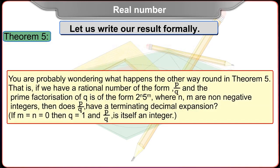You are probably wondering what happens the other way round in Theorem 5. That is, if we have a rational number of the form P upon Q, and the prime factorization of Q is of the form 2 raised to n into 5 raised to m, where n, m are non-negative integers, then does P upon Q have a terminating decimal expansion? If m is equal to n is equal to 0, then Q is equal to 1, and P upon Q is itself an integer.